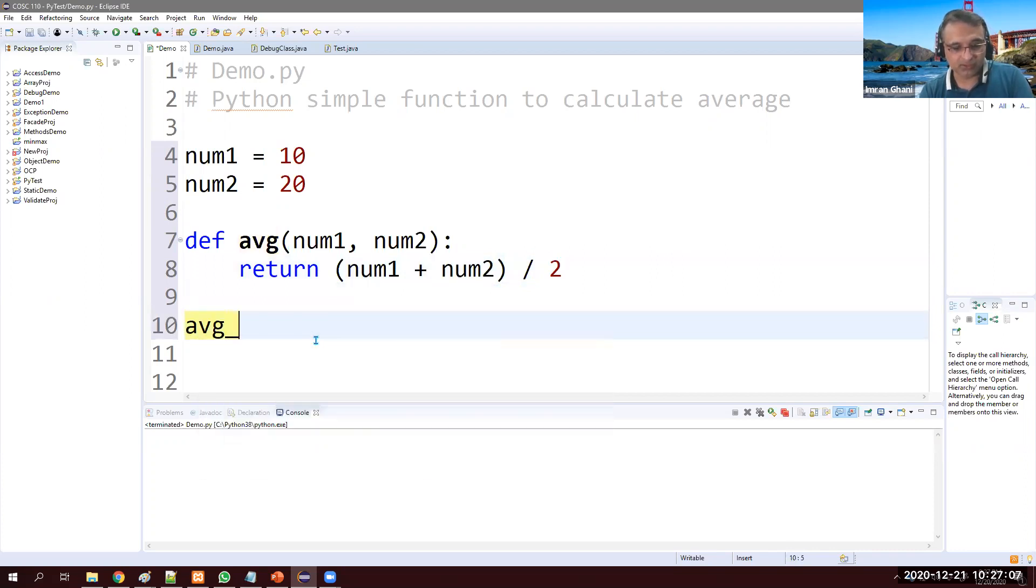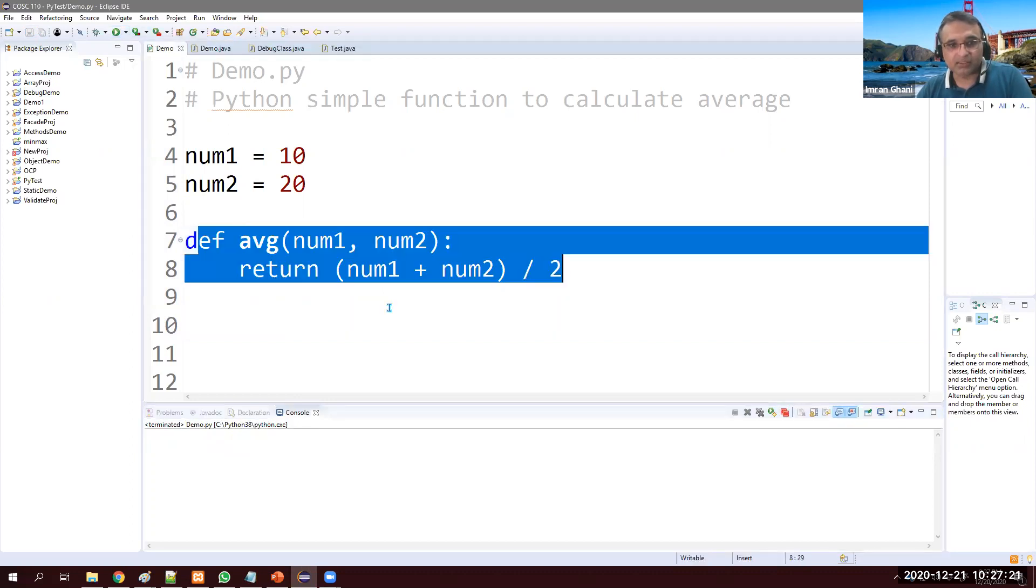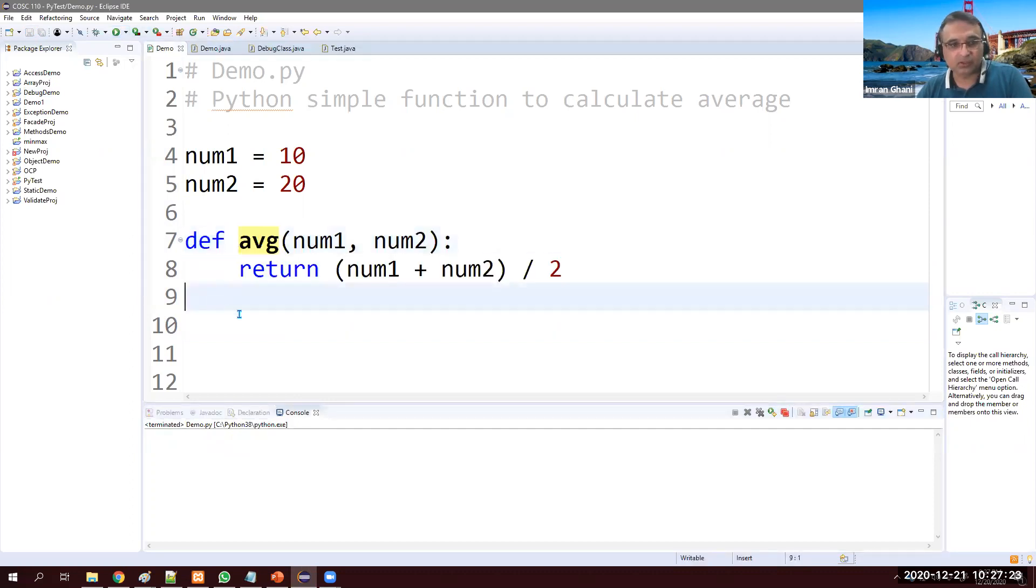Let's call it avg_val like average value. And here we need to call this method because if I don't call this method, if I save and run you will see nothing. The method is there but we have not invoked it or called it.